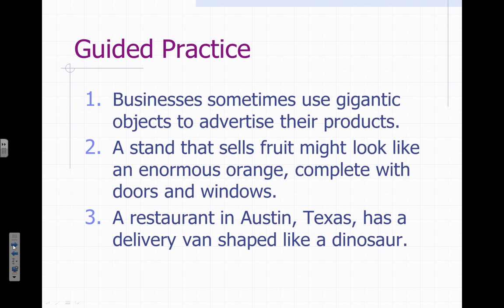Now let's test your skills. On a scrap sheet of paper, read each of the following sentences and see if you can identify the nouns. Sentence one: Businesses sometimes use gigantic objects to advertise their products. Two: A stand that sells fruit might look like an enormous orange complete with doors and windows. Three: A restaurant in Austin, Texas has a delivery van shaped like a dinosaur. Pause and make sure you have all the nouns written down before hitting play.